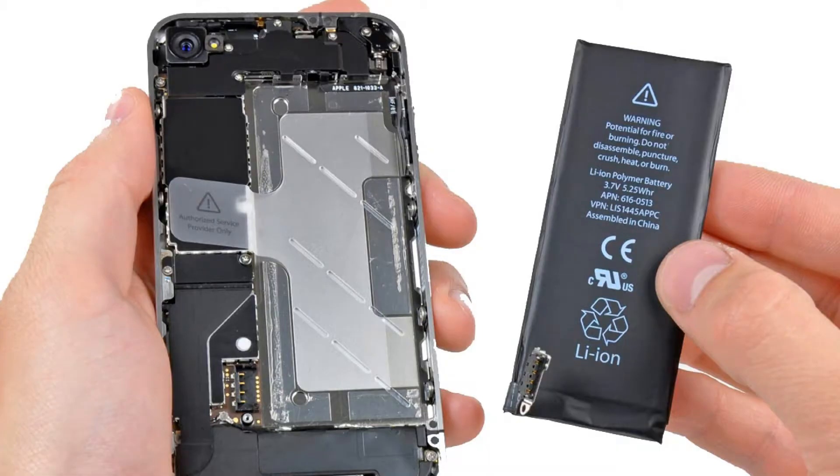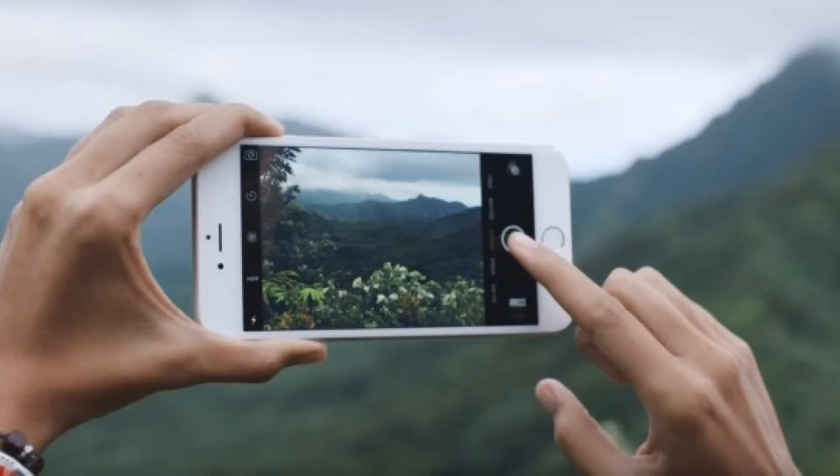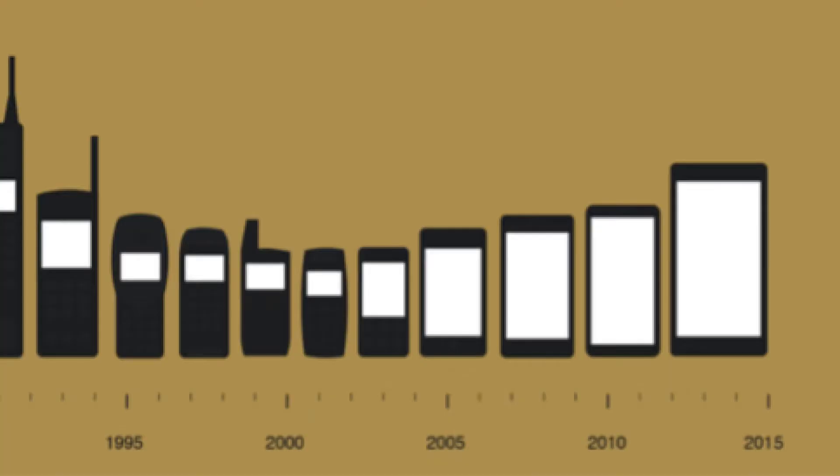If we come to the phone, we will see the battery, camera, processor, and display. If we see the display, we will see the size of the display — for example, 5-inch or 5.5-inch.